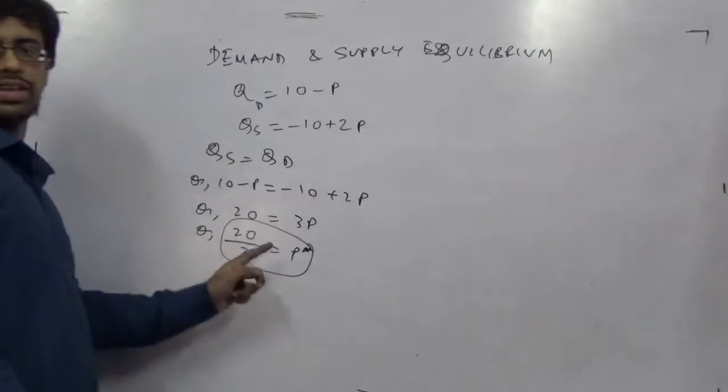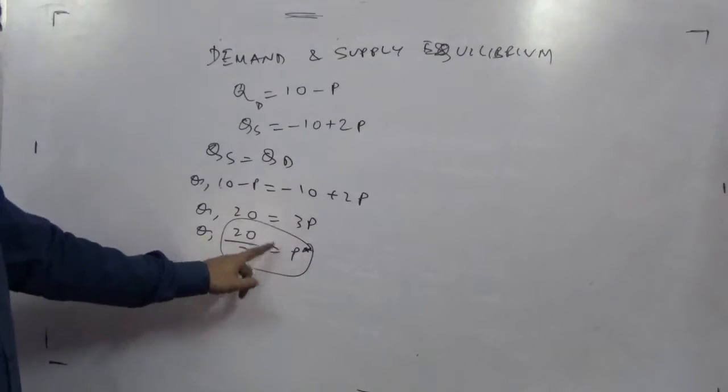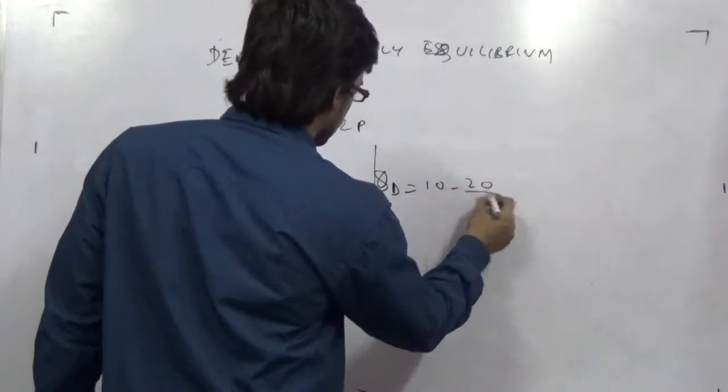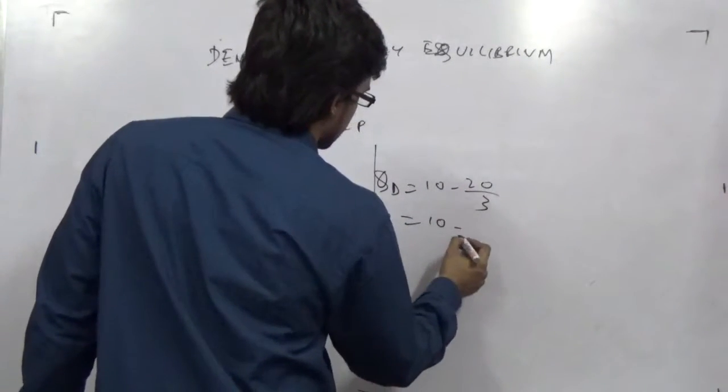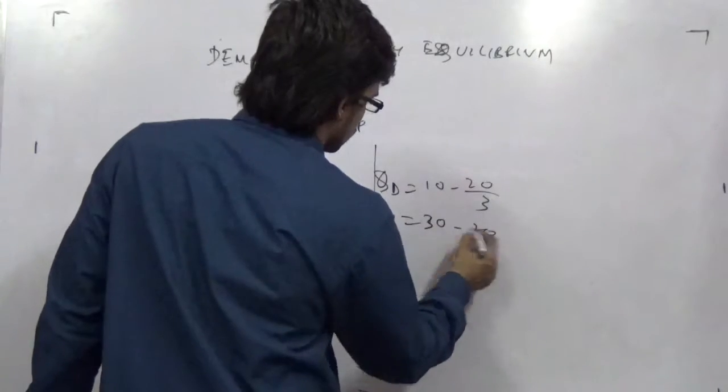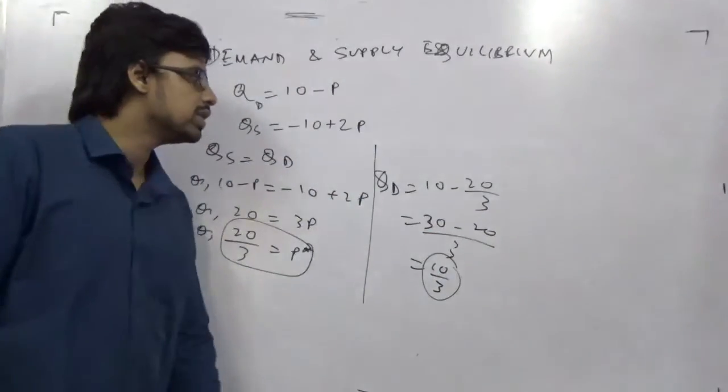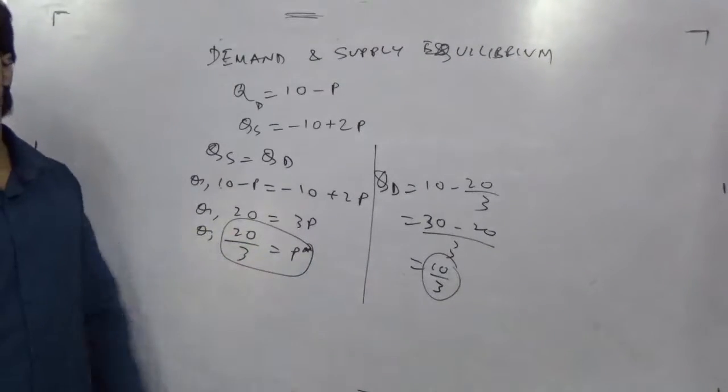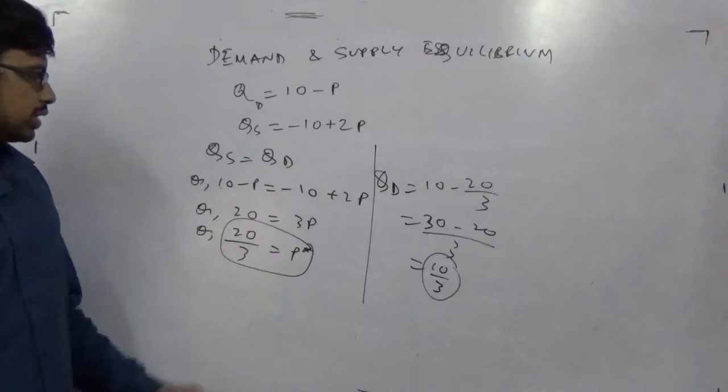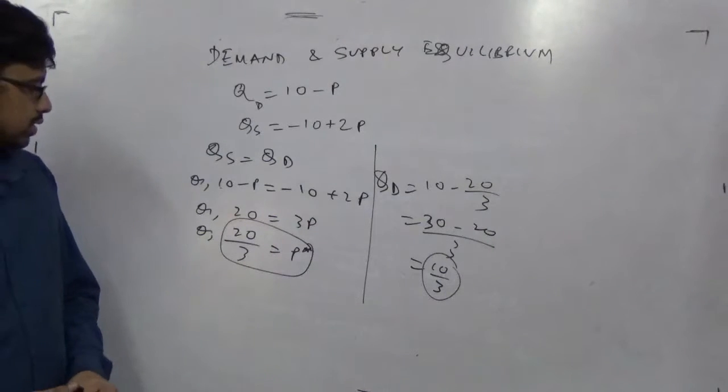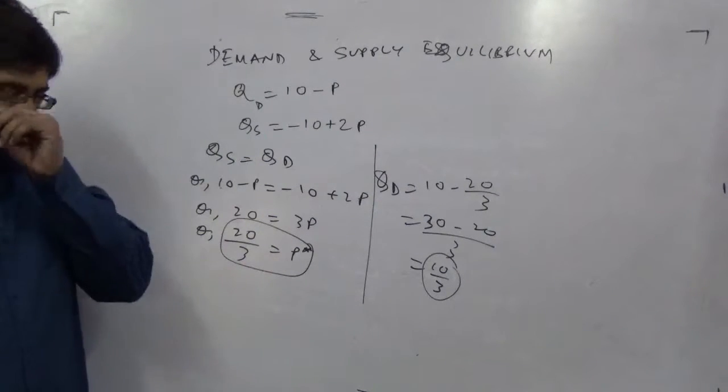When we write the equilibrium, we just put a star. You put this p star in this equation, you will get qd also. 10 minus 20 by 3, that is 30 minus 20 by 3, which is 10 by 3. Quantity demand is 10 by 3, that is 3.33 units and the equilibrium price is 6.33.